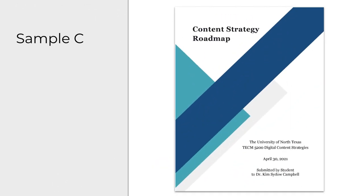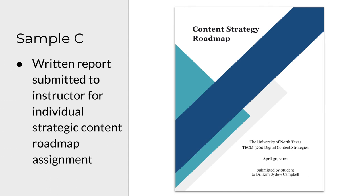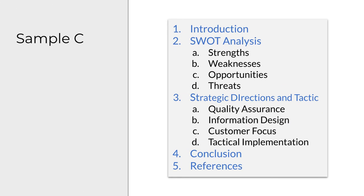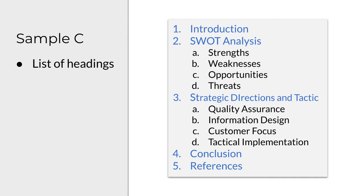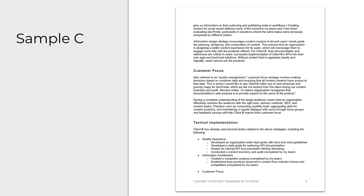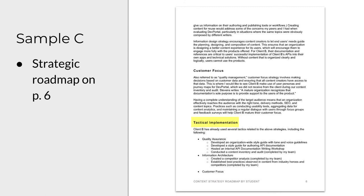Now let's consider Sample C. It was completed by an individual student and was directed toward me as their instructor for the strategic content roadmap report — the client did not see it. Sample C included an introduction, a SWOT analysis, a big section on strategic directions and tactics, then a conclusion and references. On this slide I'm showing an image of page six, one of the pages on which the student described their strategic roadmap for the client going forward. This student identified three strategic directions including customer focus, and then also provided a detailed list of tactics for implementing their strategy to raise their client's level of content operations maturity.